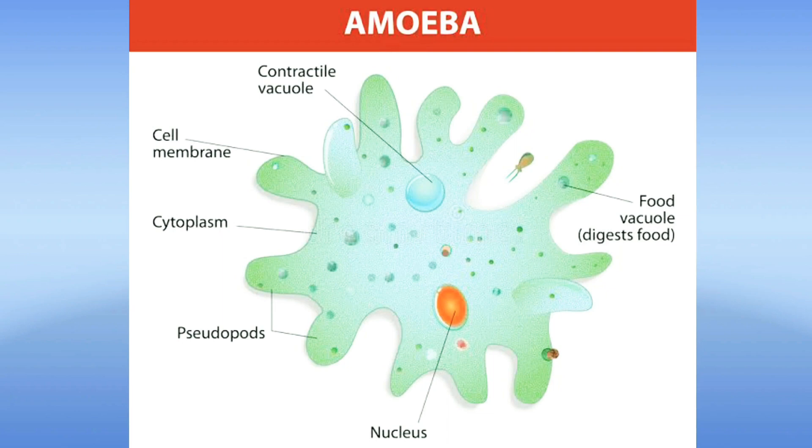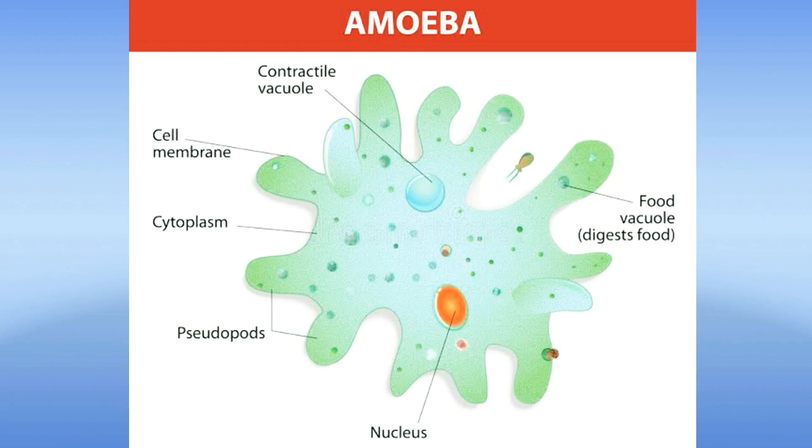Sometimes a single cell is an organism which is capable of doing all the life activities. Say for example amoeba, it's a single cell but it is capable of performing all the life activities by itself. Whereas in case of multicellular organisms like human beings, the body is made up of a number of cells which assume different functions in it.